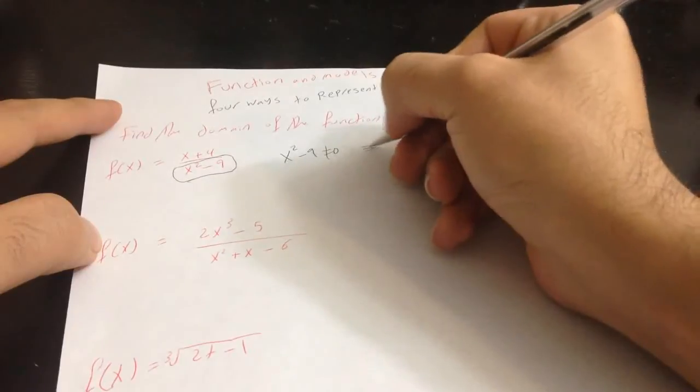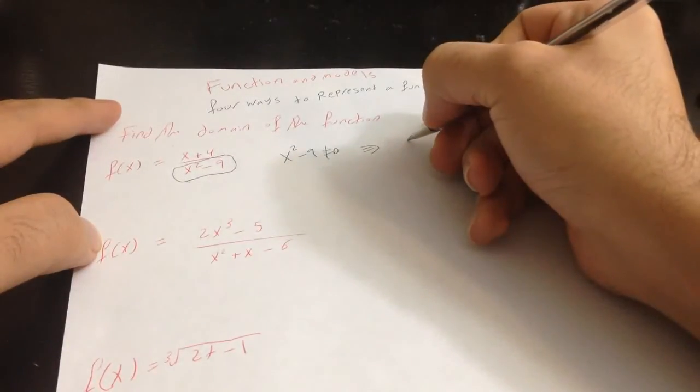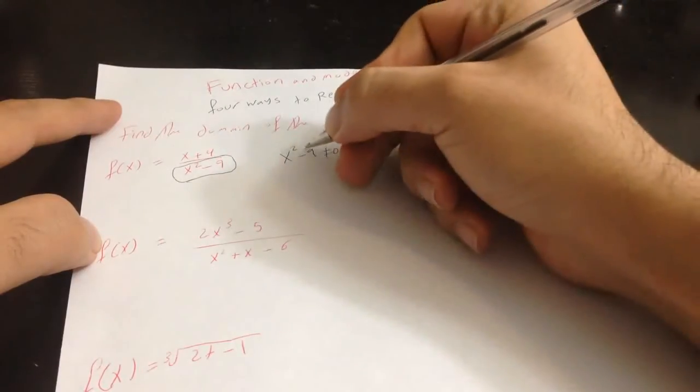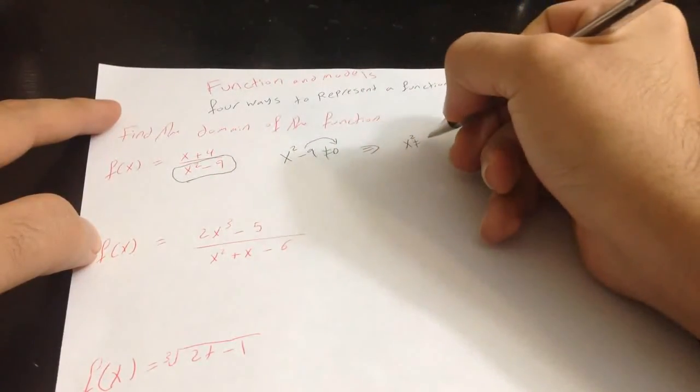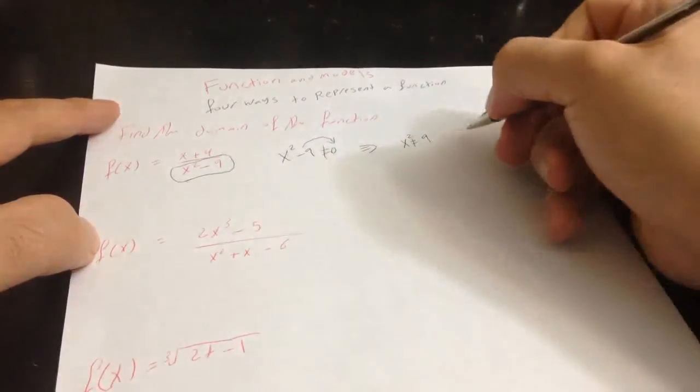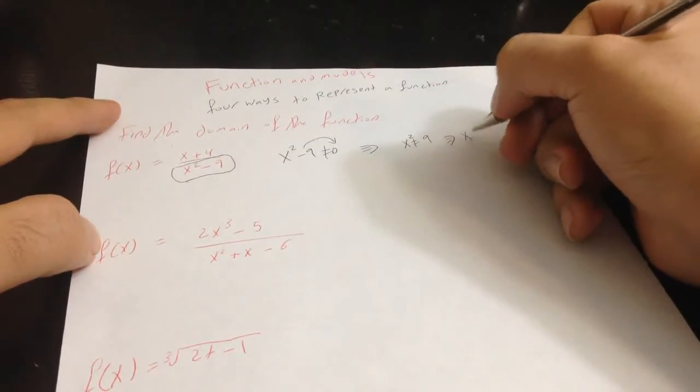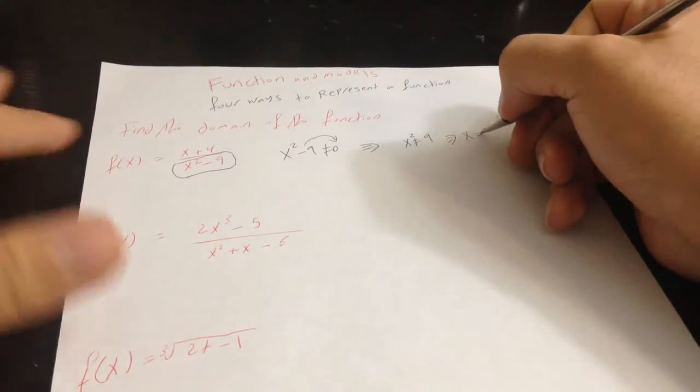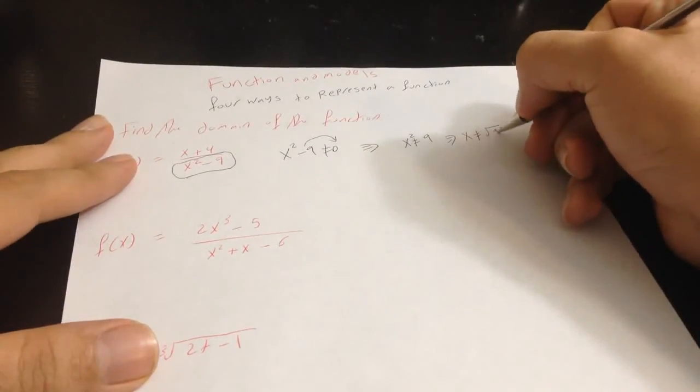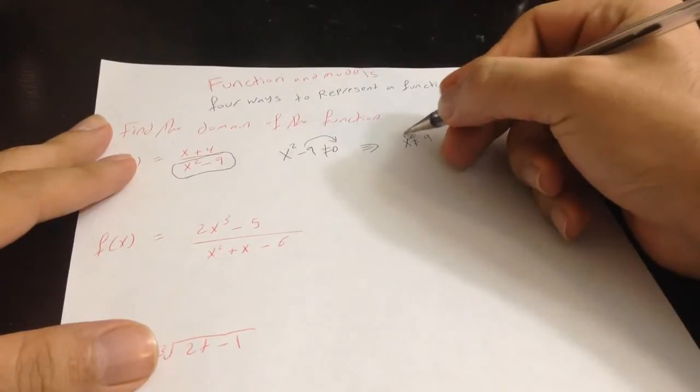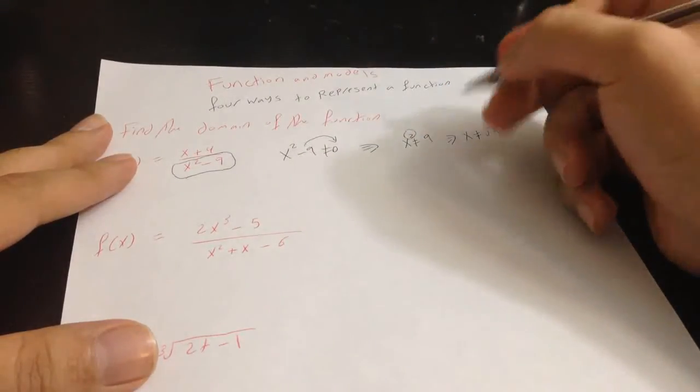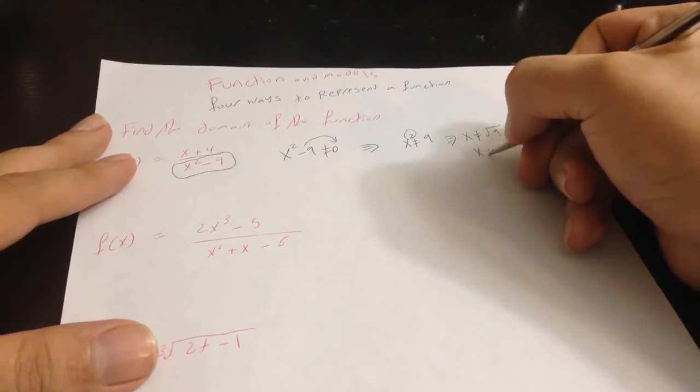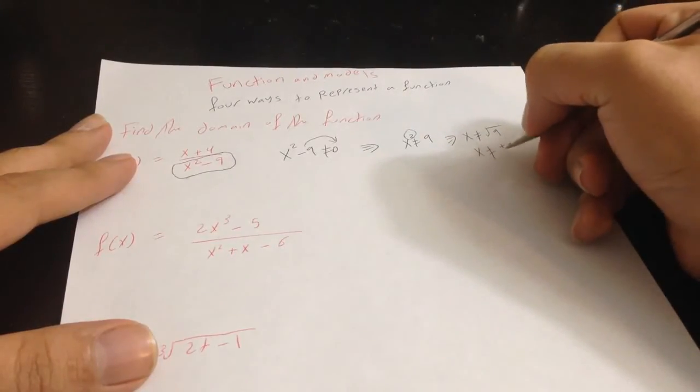put x square on this part and move minus 9 to this part, which will equal 9. And then x is not equal to radical 9, because we want to get rid of the square. So we have to write the root, so x is not equal to positive and negative 3.